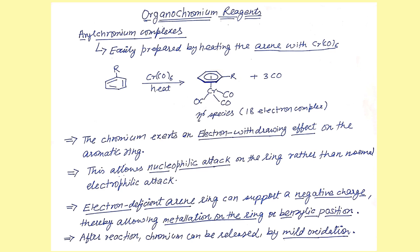Talking about the arylchromium complexes, they can be easily prepared by simply heating the arenes with chromium hexacarbonyl. So what you have to do is simply heat them, and what you end up getting is the formation of this 18-electron complex.